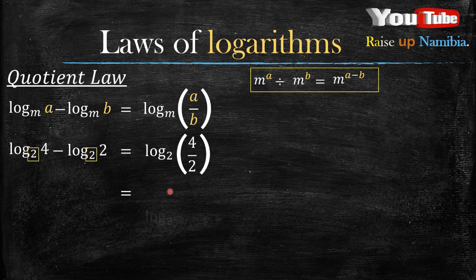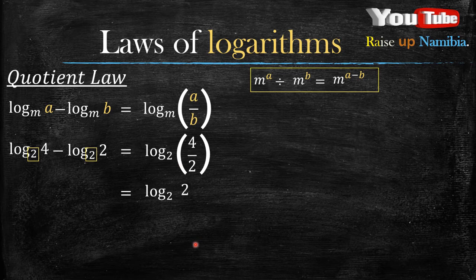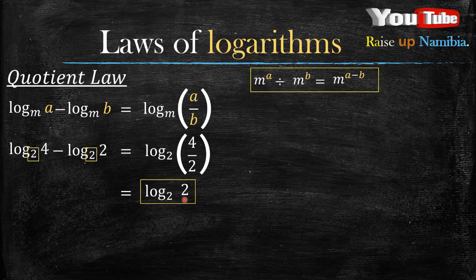Now you check whatever number is at a, which is 4, and you divide it by whatever number is at b, which is 2. So we divide 4 divided by 2. What answer will you get? You will keep your log base 2, and then 4 divided by 2 is 2.